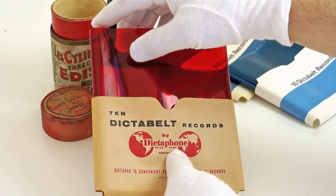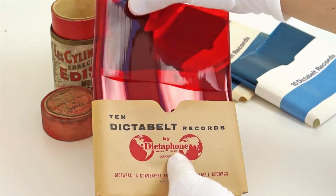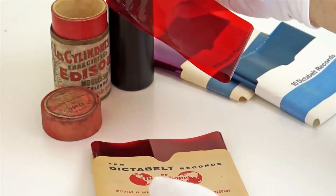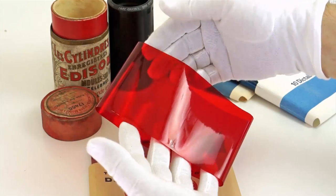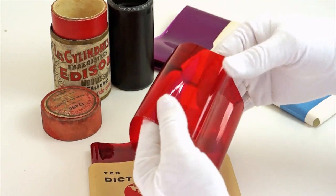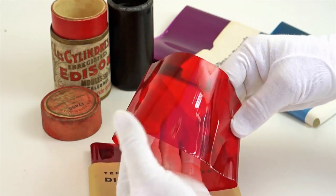Launched in 1947, the Dictabelt was a thin, floppy cylinder made of vinyl, red, blue or purple in color. It was resistant, and provided it was not flattened, it could be safely stored in an envelope.